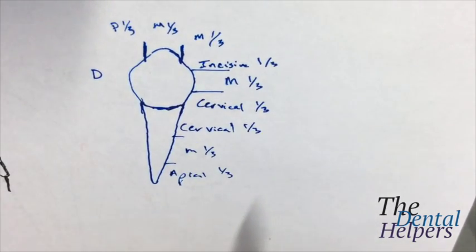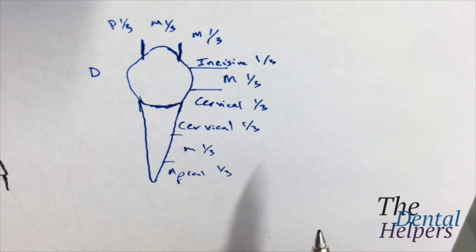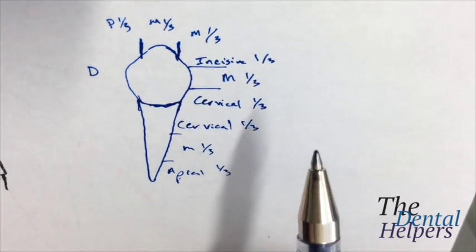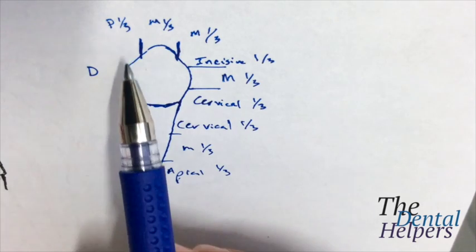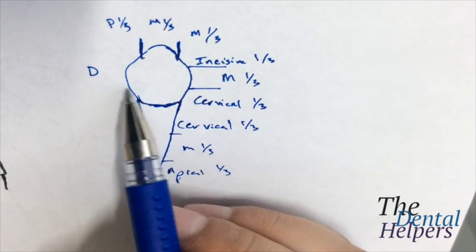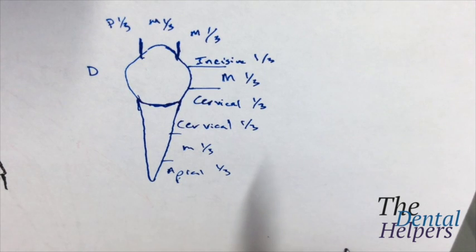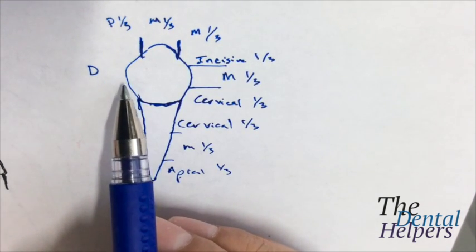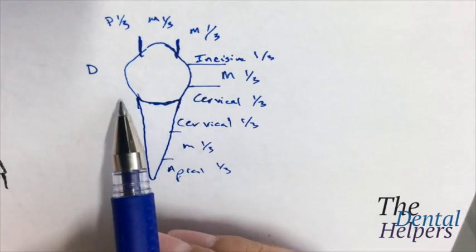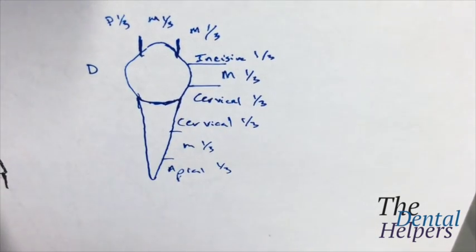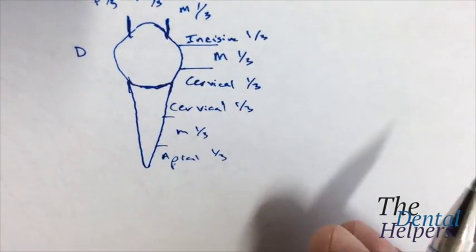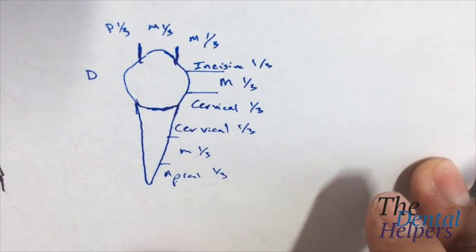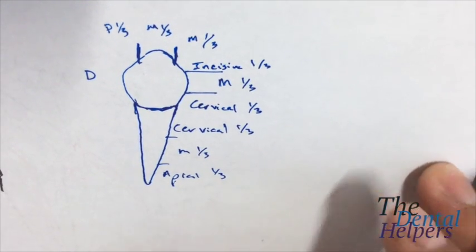And the reason this part is important is, say you're doing a prep, and you need to know where you're going to be breaking up. So if you were to cut this area right here, you'd know this is the distal third. And you want to know how far you're going down. Are you going to cervical or just the middle? So these are just landmarks to help you figure out where you're going when you're cutting a prep.